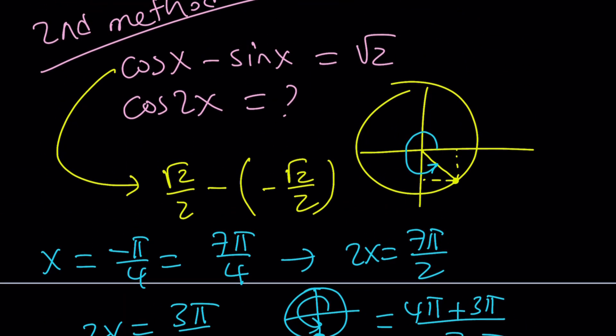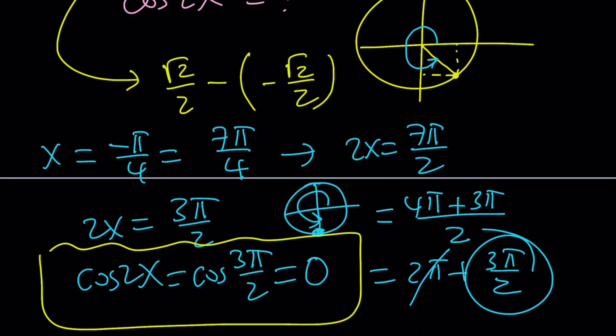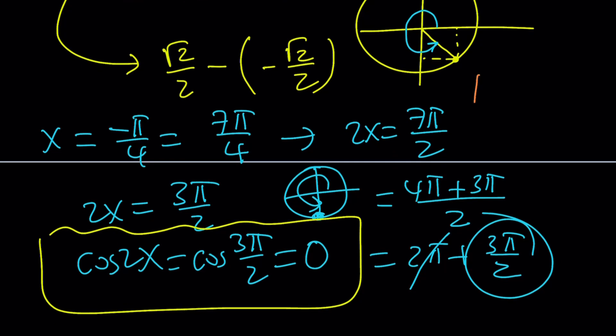Another method that I can think of is you can also square both sides, find 2 sine x cosine x, which is sine 2x. And then by drawing a right triangle, you can find cosine 2x. You just have to pay attention to the quadrants. And that's it for today. This brings us to the end of this video. Thank you for watching. I hope you enjoyed it. Please let me know. Don't forget to comment, like, and subscribe. I'll see you next time. Until then, be safe. Take care and bye-bye.